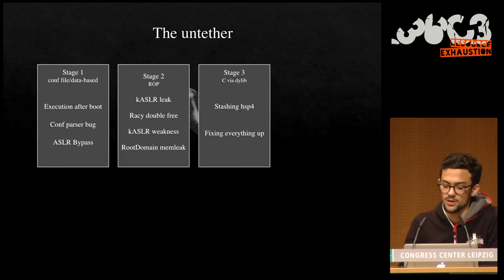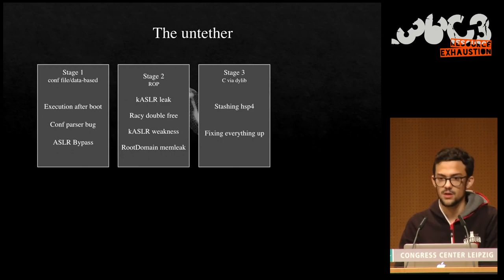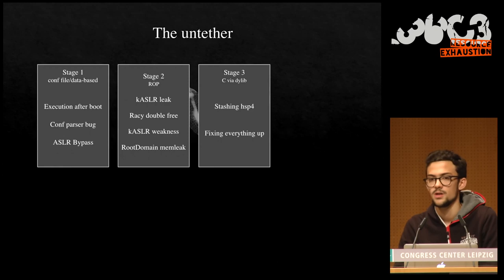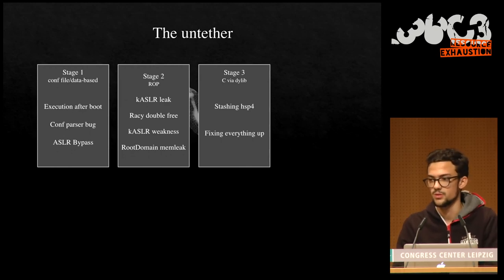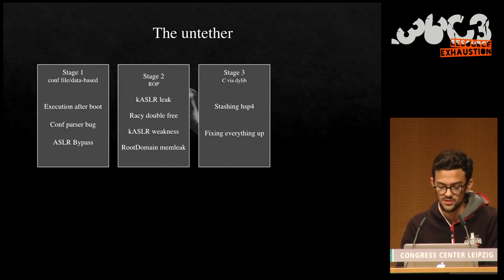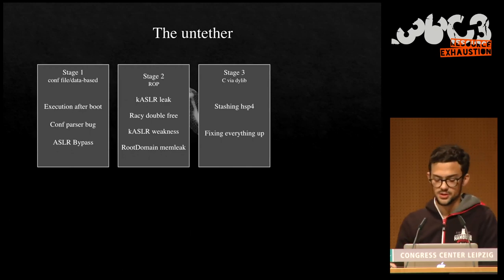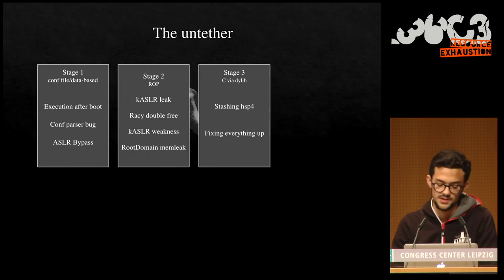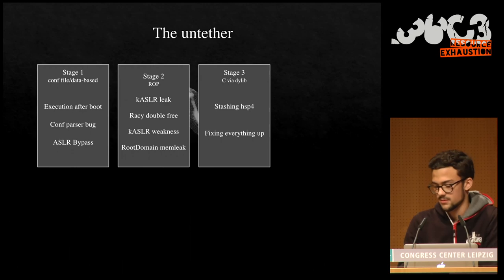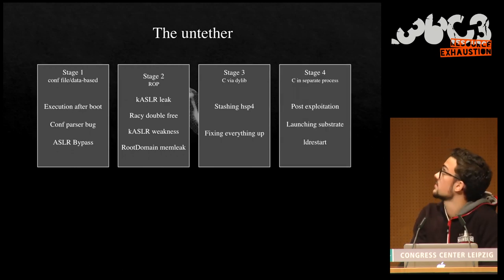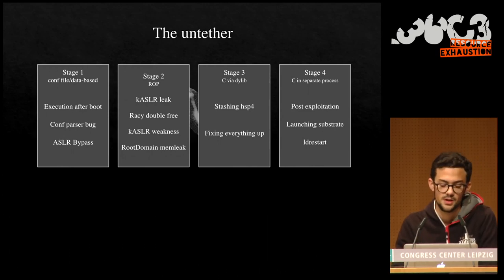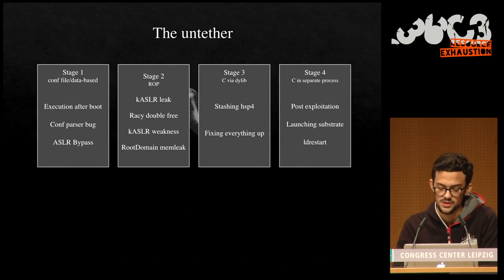Bypassing code signing gives us the ability to load an unsigned dynamic library into our process. In stage three we are in C via a dynamic library, where we stash the kernel task port into host special port 4. iOS has this concept of ports — if you have a send right to a task port of a process, you can read and write its memory. Other user-mode applications can then retrieve it and read/write process memory. After that we fix everything up and spawn stage four, which runs in a separate process and performs the whole post-exploitation process, including launching Substrate for tweak injection, then performing ldrestart to restart all launch daemons.